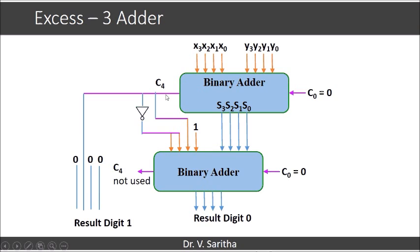And when C4 is equal to 0, we are going to subtract 3. Subtracting 3 is nothing but adding minus 3, which is 2's complement of 3. If C4 equals 0, this will become 1. So here it will be 11 and this will be 0. So it is 1101. That is adding 13 to the result.